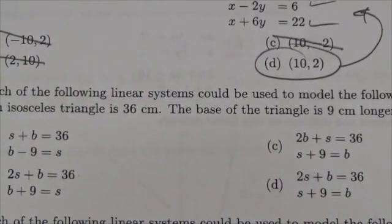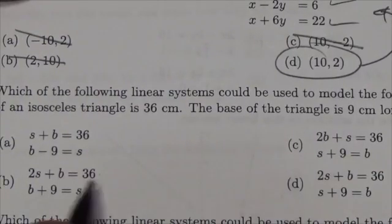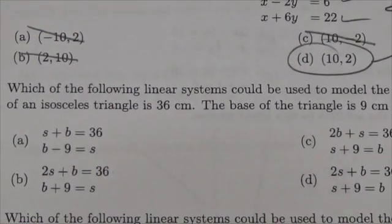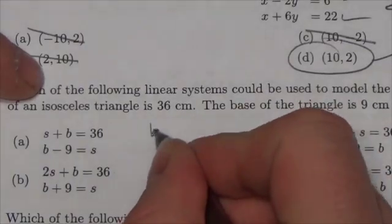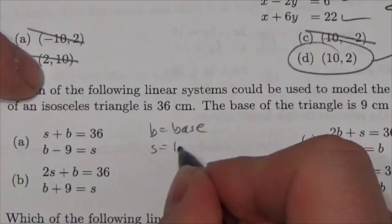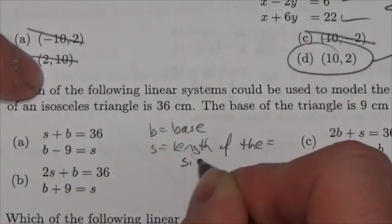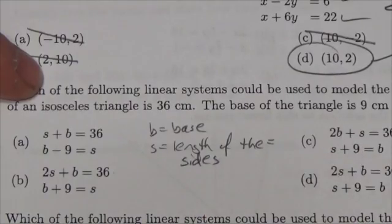So we've got to kind of come up with some variables here. Now, if you look at the possibilities, even without thinking too hard here, I think we can get that B is going to equal the base, and that S is going to be the length of the equal sides. Because it's an isosceles triangle, it's going to have two sides that are equal here.